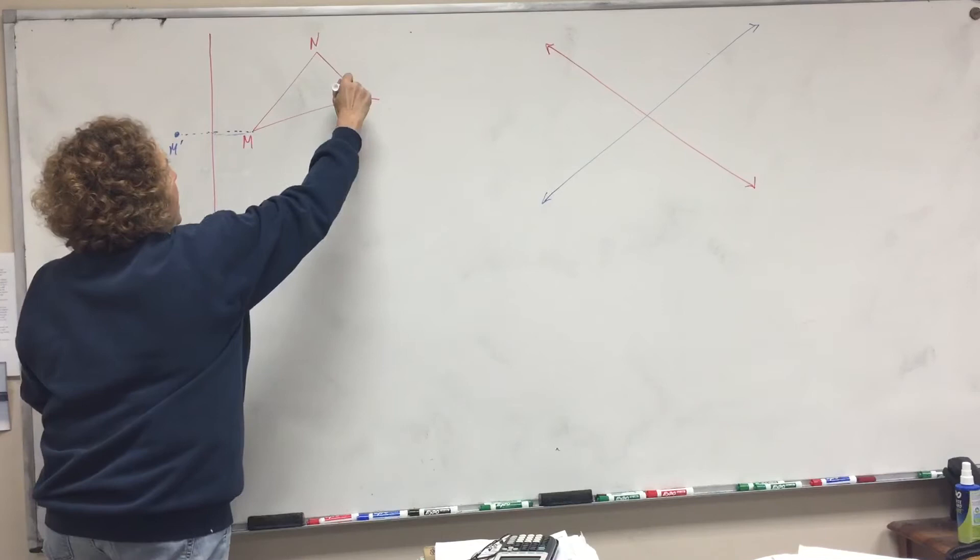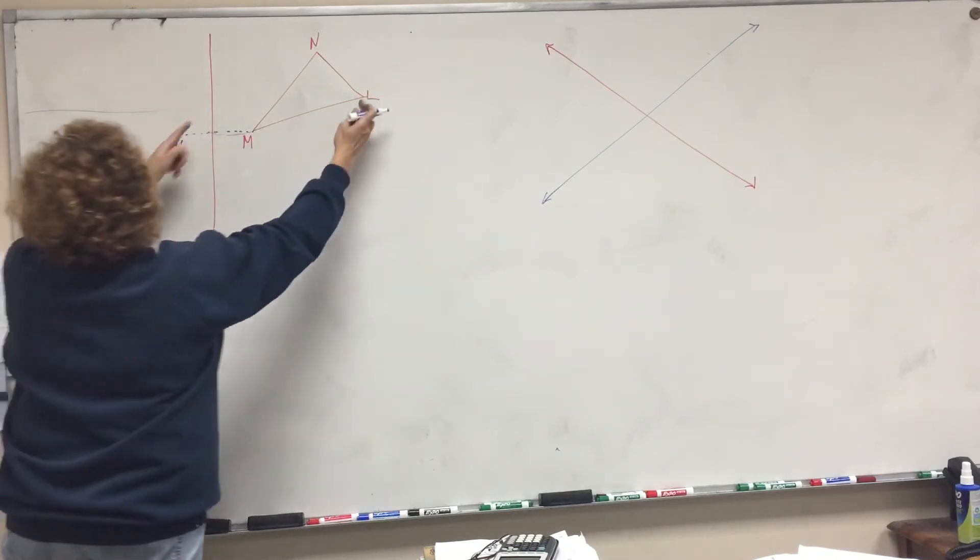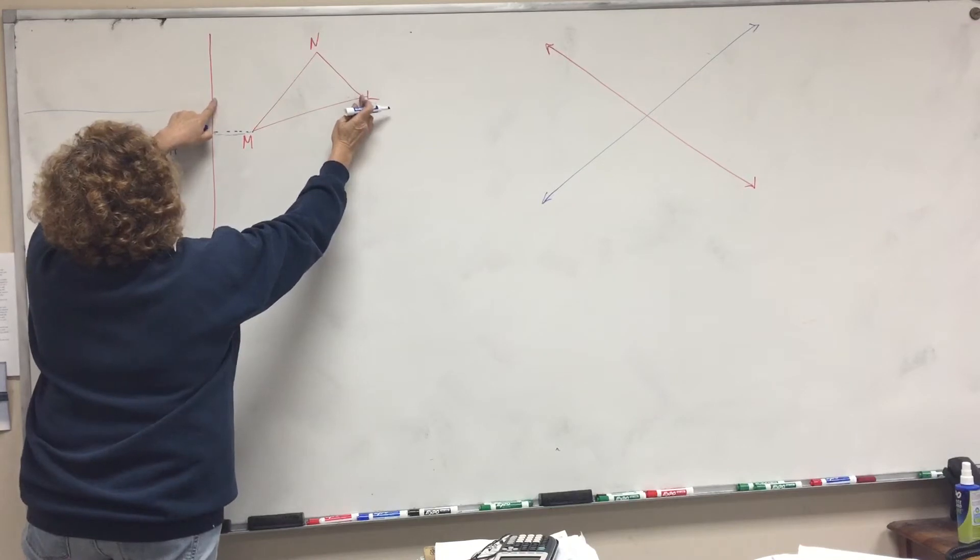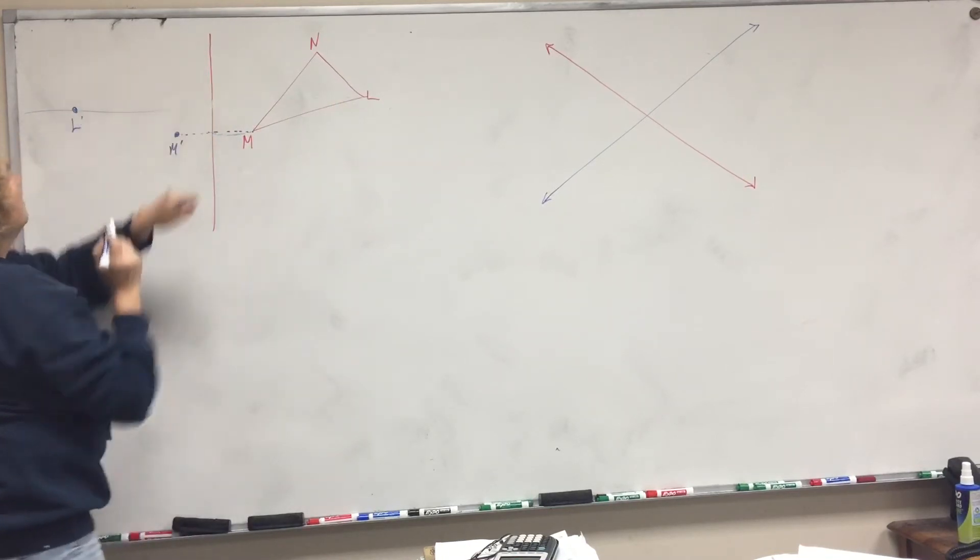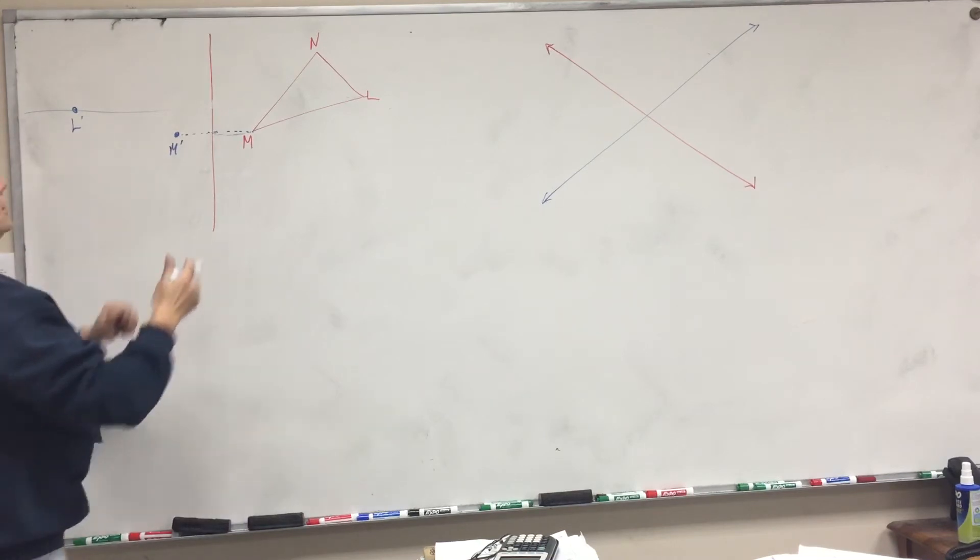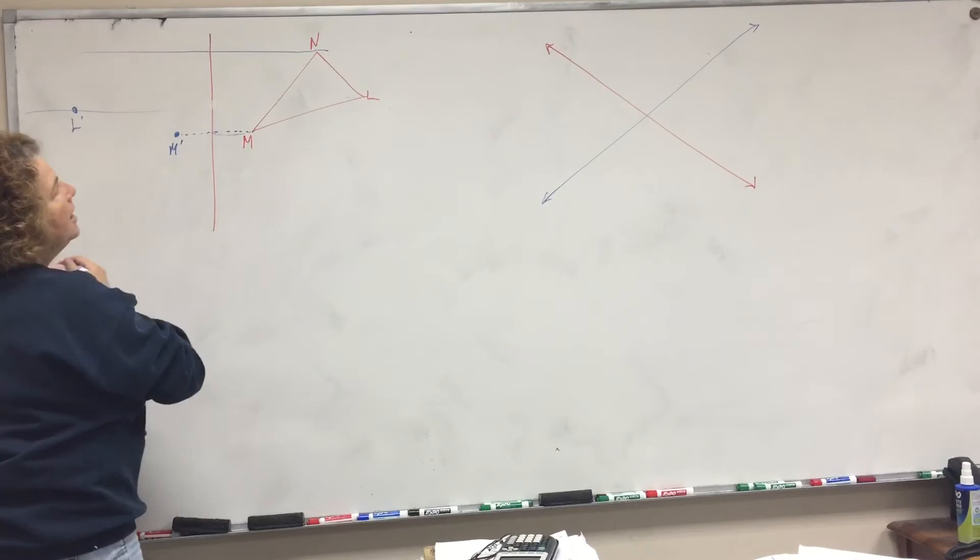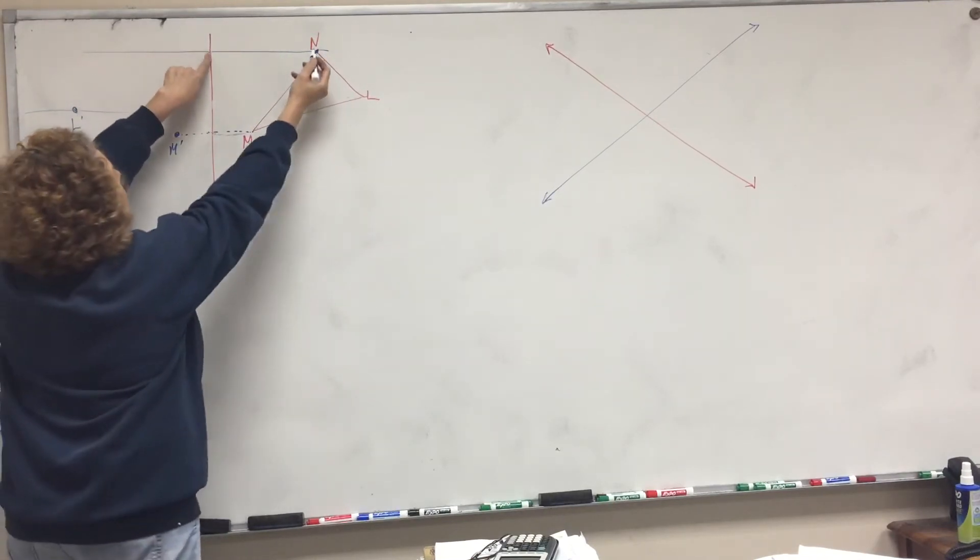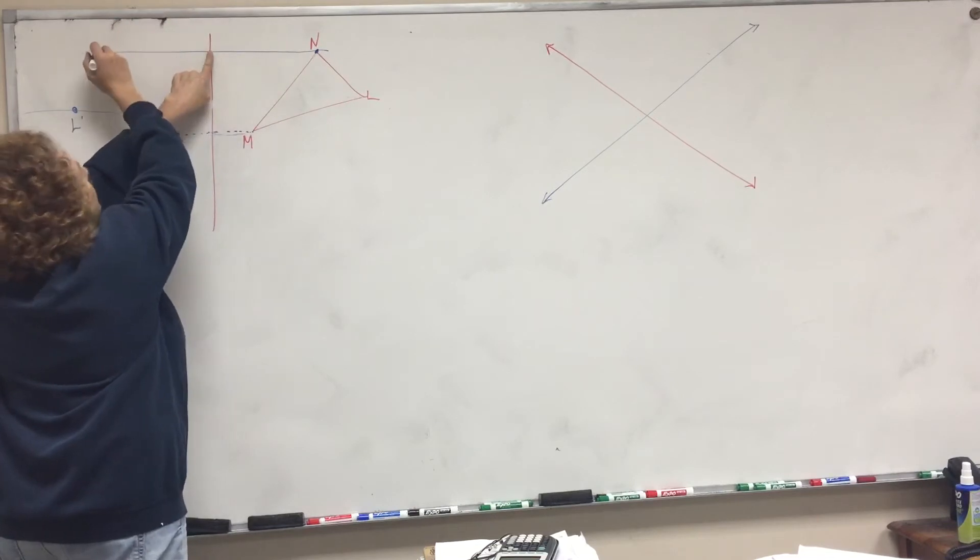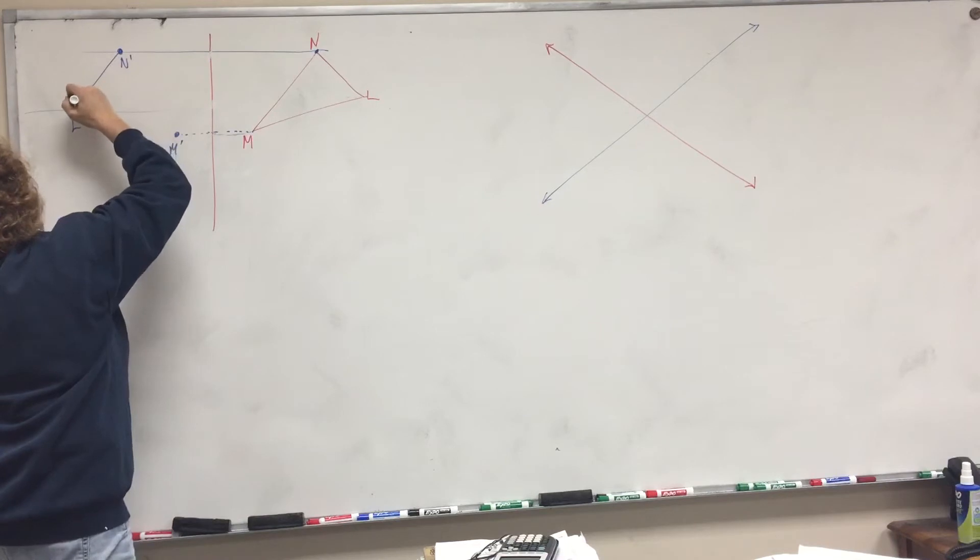Then you do the same thing with L. Draw a line straight across, measure how far L is from that line, flip it over, and draw L prime. Do the same thing with N - you might want to draw a line across with a pencil. Measure how far N is and reflect it over, write N prime, then connect them.